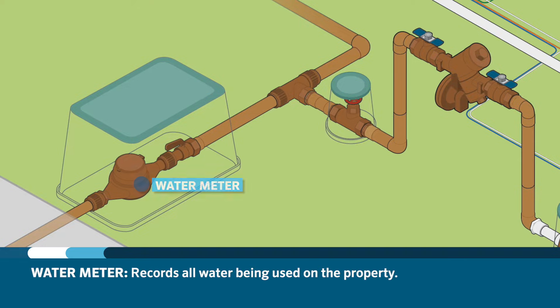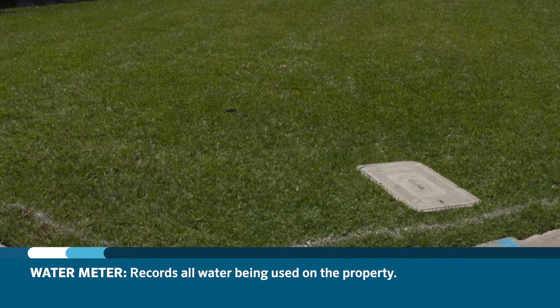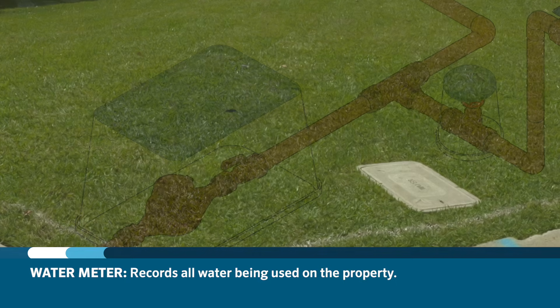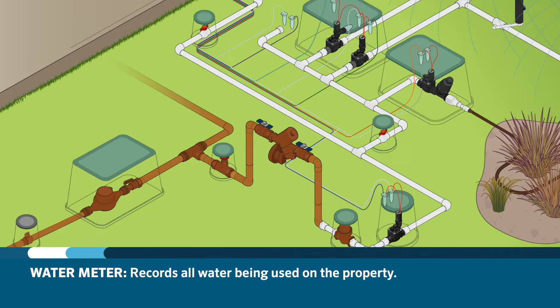The water then passes through the service line to a water meter. So what is a water meter? The water meter reads and records all water being used on the property. Before the water can be used on the property, it must pass through a water meter to track the quantity of water used inside the building or out in the landscape.